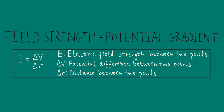So E stands for the electric field strength between two points, V is the electric potential, and so delta V stands for the potential difference between two points, and delta R is the distance between those two points. The potential gradient is the potential difference divided by the distance between the two points. A couple of things to note: often you'll see a minus sign in front of the potential gradient, and strictly that is needed, although it's not important for our purposes. The minus sign tells us something about the direction of the field strength.